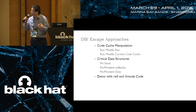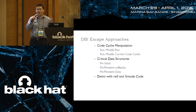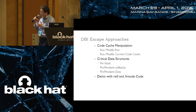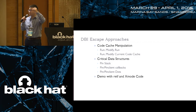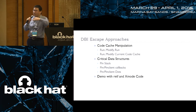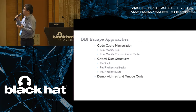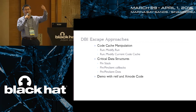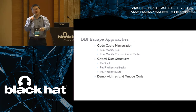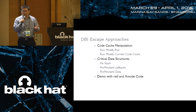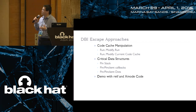For code cache manipulation, you run some code, then use other code to locate the code cache and modify it, then run it again — and you take over. Another approach is self-modifying code cache: your running code searches for a signature you created, then at runtime once it finds the signature it modifies the following code cache entries directly. Once your controlled code runs, you take over. Also, if you can take over the DBI stack — which has lots of return address and function pointer entries — by changing those stack values to point to your code, you can take over easily.